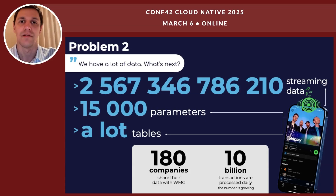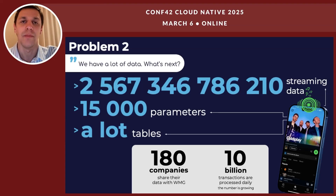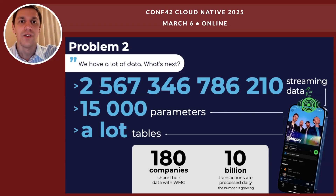Data is everywhere. At Wuhan Music Group we have over 2.5 trillion streaming data points, 15,000 parameters tracked for analysis, hundreds of tables about artists, tracks, albums, and audiences. 180 companies provide and share different data with Wuhan Music Group, and 10 billion transactions are processed daily — and growing every day. The problem is not having data; the problem is making sense of it. That's where AI comes in, but we need to know how to use it.